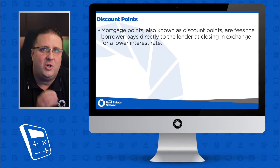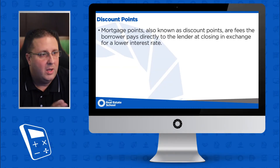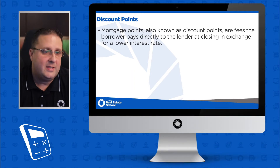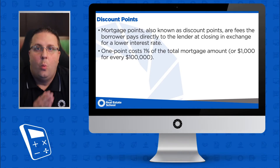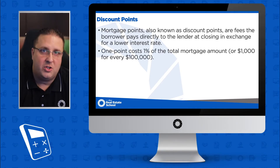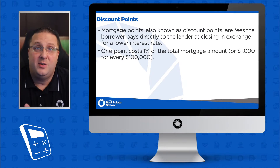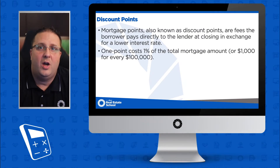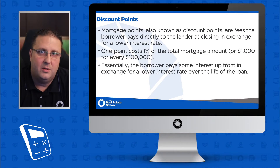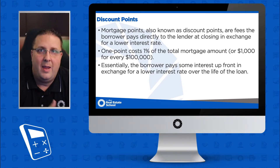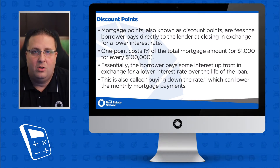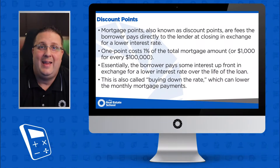Now what are these things? Let's make sure we have a good understanding of what they are. Mortgage points, also known as discount points, are the fees a borrower pays to the lender at closing in exchange for a lower interest rate. One point costs 1% of the total mortgage amount, or basically $1,000 for every $100,000 of the loan amount. It's also called buying down the rate.